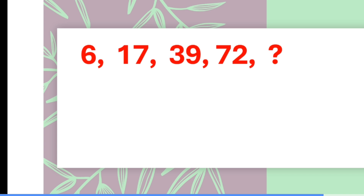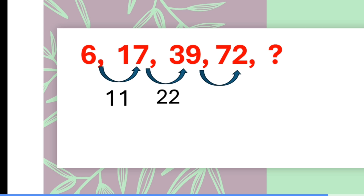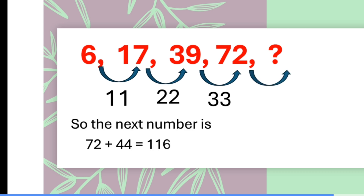Now we have to find the difference. The differences are 11, 22, and 33. So what should be the next difference? The next difference must be 44. Therefore, the next number is 72 plus 44, which equals 116.